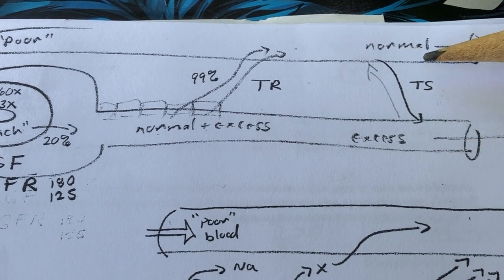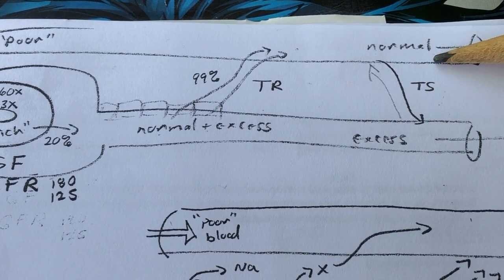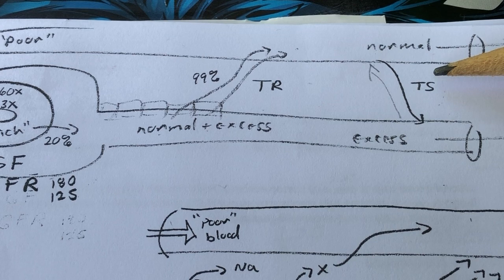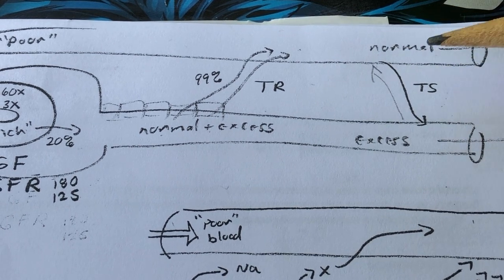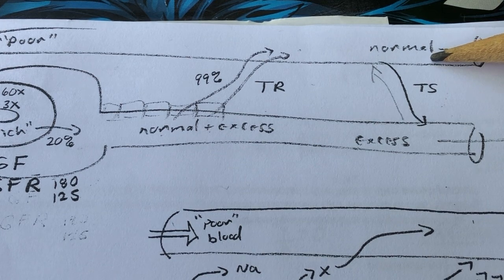Tubular secretion helps maintain some normal levels. The most common example would be pH—adding or subtracting hydrogen ions in order to try to control the pH of the blood.